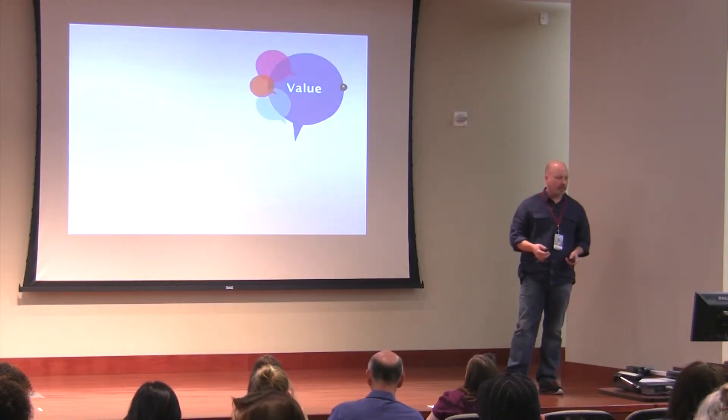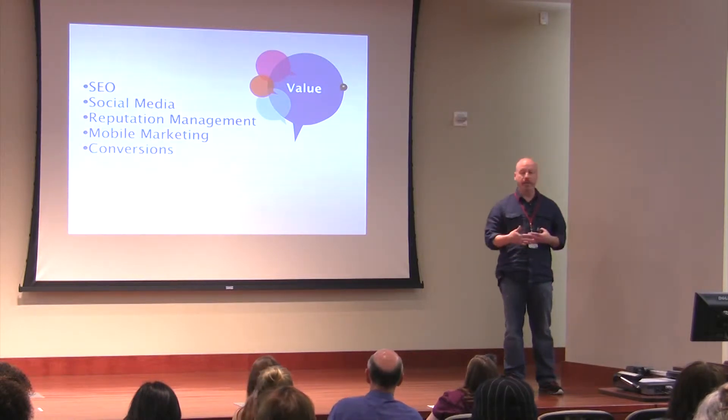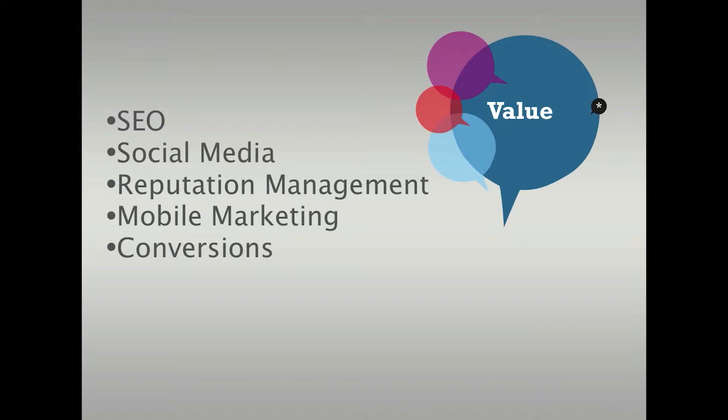Starting with what's valuable for dealers — there are certain things we needed to integrate. Number one: SEO, huge. They needed free organic search to work. Social media is obviously a big deal right now. Reputation management is a big term in the car business, though I dislike it because it implies they're managing a poor reputation as opposed to creating one. So we've gone to 'reputation creation.' And then mobile marketing is big. As you've seen from all the speakers over the last couple days, everything comes down to conversion — how do you get somebody to engage, to buy? That's the end result in whatever we do.